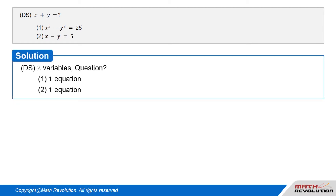Solution. Now we will solve this DS question using the variable approach. DS: two variables. Question, Condition 1 gives one equation, Condition 2 gives one equation. DS question with two variables.